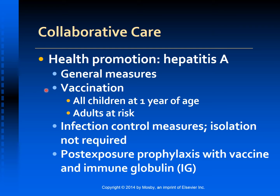Vaccination is the best protection against HAV. All children at one year of age should receive the hepatitis A vaccine. A single dose is given IM in the deltoid muscle. The primary immunization provides immunity within 30 days after a single dose, and a booster dose is recommended 6 to 12 months after the primary dose.